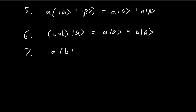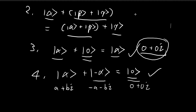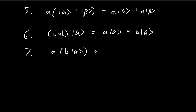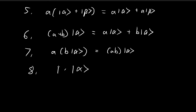The seventh axiom is related to the associative property for scalar multiplication: it doesn't matter what order we do the multiplication in. We can either multiply the scalar to the vector first and then multiply by a, or multiply the scalars together first and then multiply to the vector — a(b·alpha) = (ab)·alpha. The eighth axiom is that scalar multiplication must be defined such that multiplying one to any vector gives back that same vector — 1·alpha = alpha.